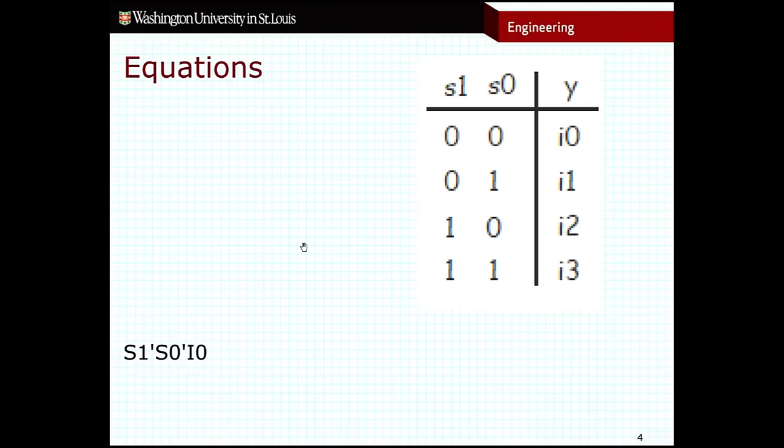So we can construct additional terms of this equation using those guidelines. I1 is true. That would give us the term S1', S0, and I1. And then the following term would be S1, S0', and I2. And then finally, the last term would be S1, S0, and I3.